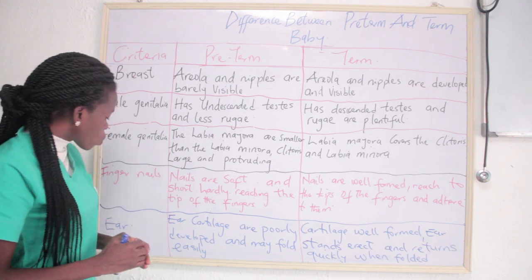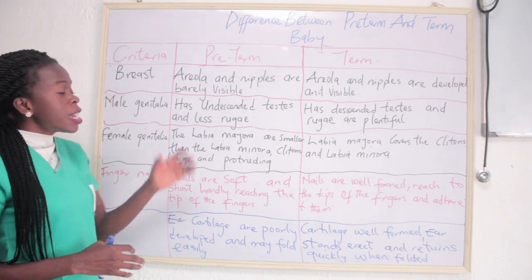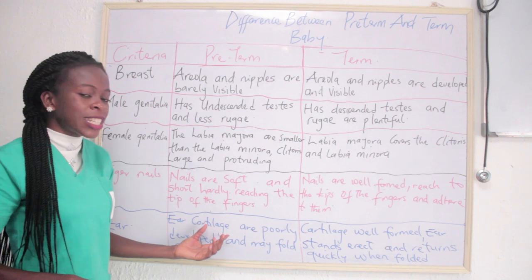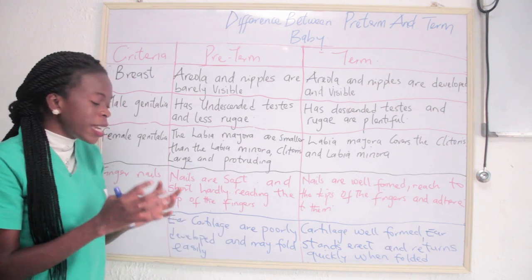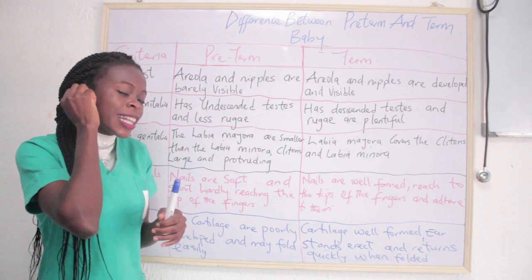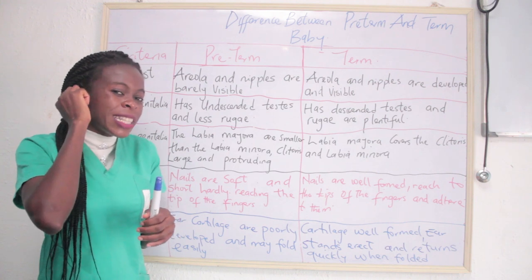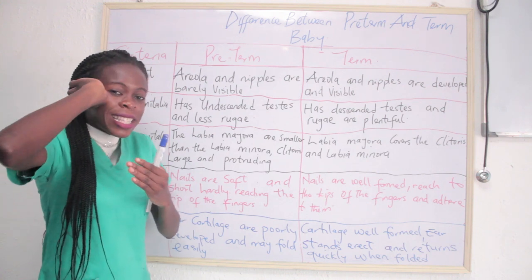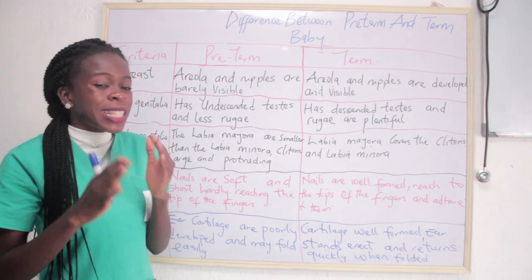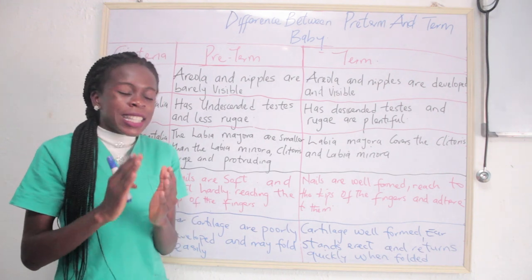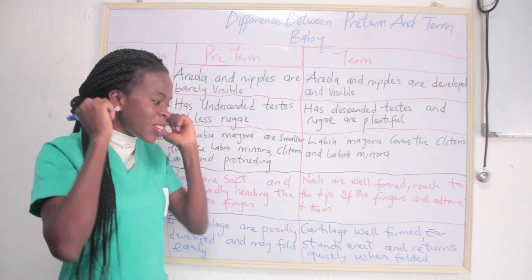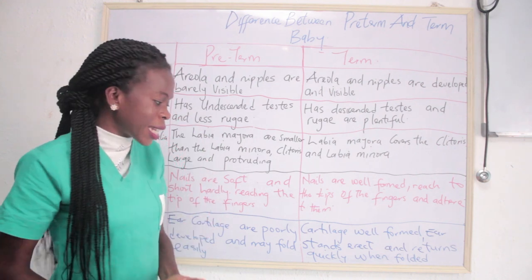The last criteria is the ear. In pre-term babies, the ear cartilages are poorly developed and may fold easily. In term babies, the ear cartilages are well formed — they stand erect and return quickly when folded.